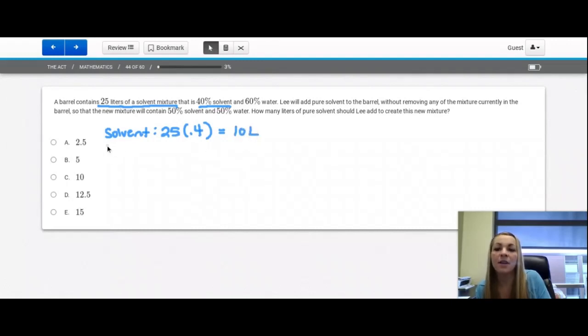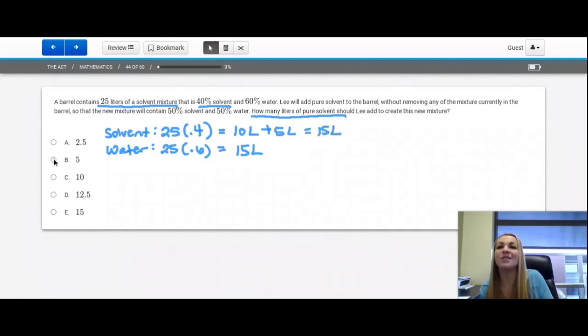Let's do the same thing for water. We have 25 liters to start times the 0.6, which is 15 liters. And this makes sense because 10 plus 15 is 25 liters. What we need to figure out is how many liters of pure solvent should be added to the new mixture. Well, right now it's at 10 and I want it to be 15 because I want them to be 50-50. So if I add 5 liters, that's going to get me to 15 liters. That is option B.